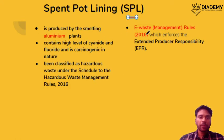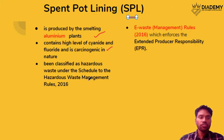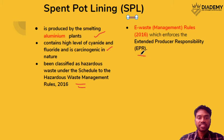The next topic is spent pot lining, a result of the smelting process in aluminum plants. In smelting, cyanide and related compounds are used — these are carcinogenic and hazardous agents. They have been notified under the Hazardous Waste Management Rules 2016. Note that extended producer responsibility has been asked in UPSC prelims regarding e-waste.